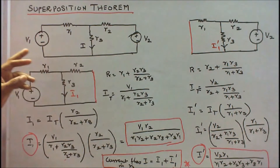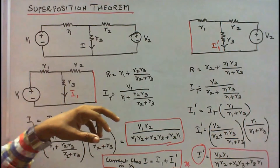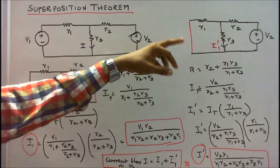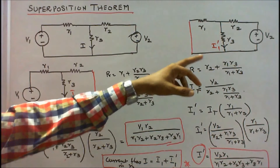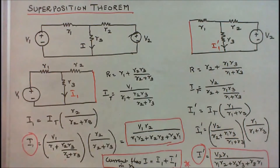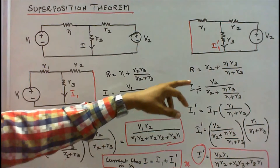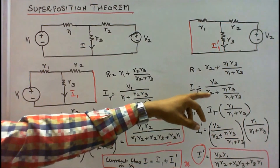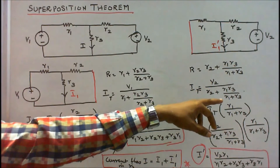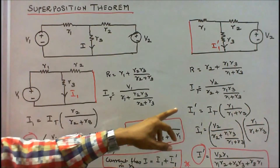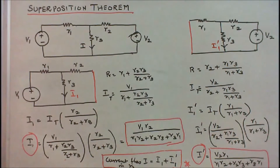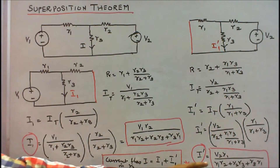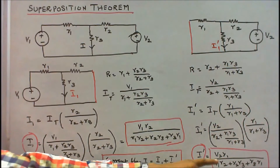Second, I deactivate source V1 by shorting it. Now resistors R1 and R3 are in parallel. Therefore, total resistance R equals R2 plus (R1·R3)/(R1+R3). Total current I2 equals V2 divided by [R2 + (R1·R3)/(R1+R3)]. From this I can find I3', which equals V2·R1 divided by (R1·R2 + R2·R3 + R3·R1).